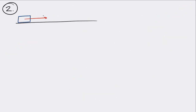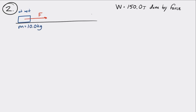In our next example, let's say an object is at rest. You apply a force, and while applying the force, you do 150 joules of work. If the object has a mass of 10 kg and the object is on a flat, frictionless surface,